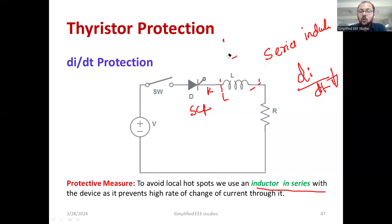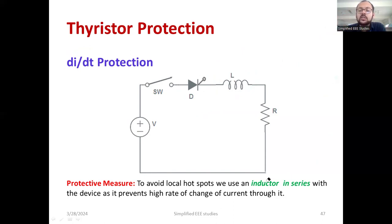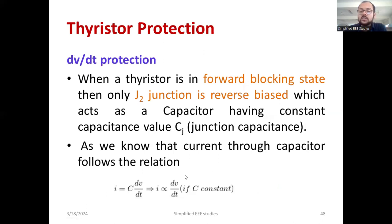To get rid of the excess DI by DT rating, use an inductor in series with the SCR. This method is known as DI by DT protection. The single-word answer for minimizing DI by DT protection is using a series inductor connected in series to the SCR, so that the DI by DT will be minimized.